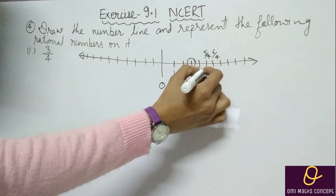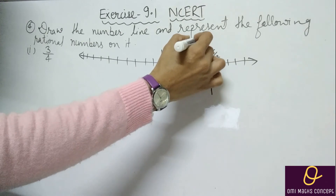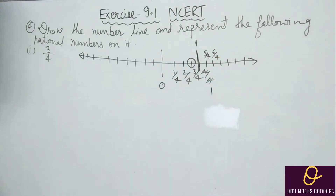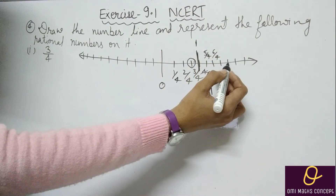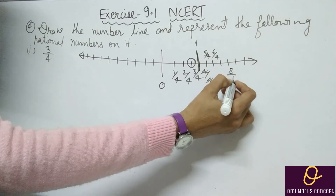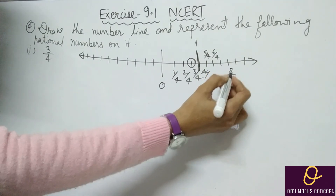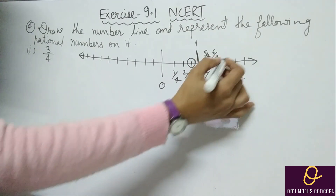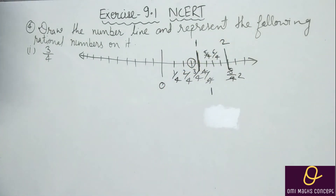Toh yeh wali jo line hai — isko aap lendi kar doge, aur yahan par note karoge. 8 by 4 jab hum lenge toh yeh kya aa gaya — 4 by 4 means 2 aa gaya — isko bhi aisi lendi karna hai. Yeh aapko karna zaroori hai.